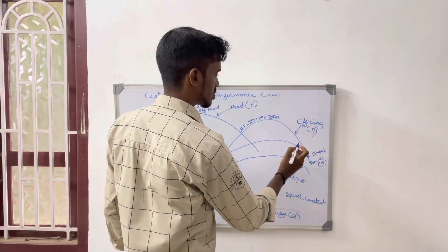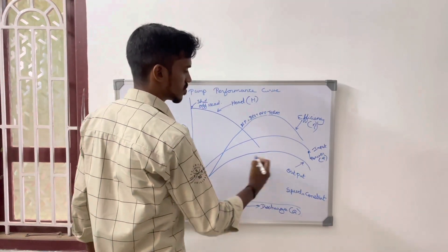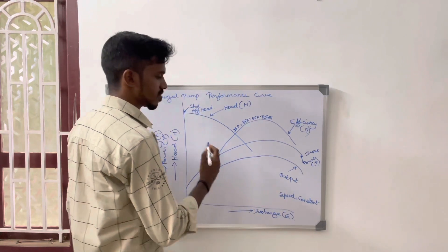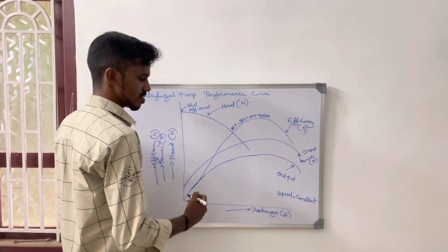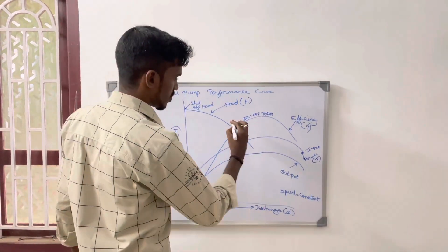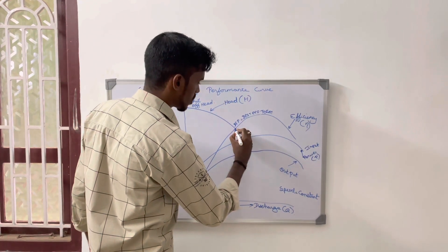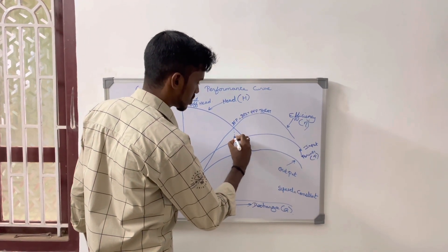This curve shows the efficiency. This is the input power and this is the output power. The speed is constant. If you want to buy a pump, you should select it at this point.